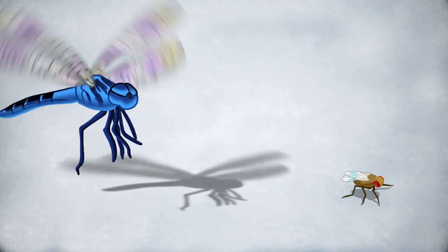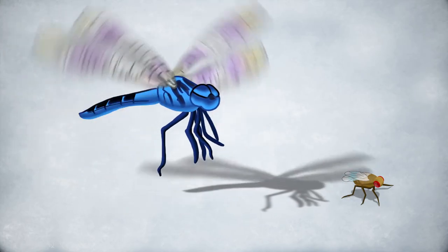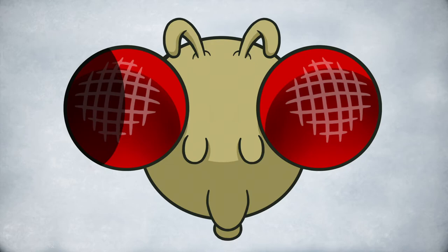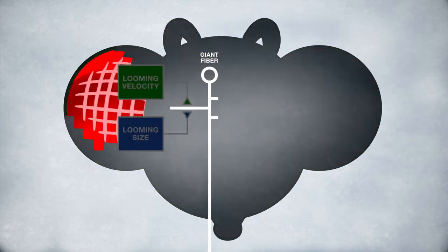Here's how we hypothesize it works. If a predator is attacking slowly, angular velocity is minimal, and its looming profile mostly activates the size encoding neurons, which then excite the giant fibers, but not always enough to reach spiking threshold.